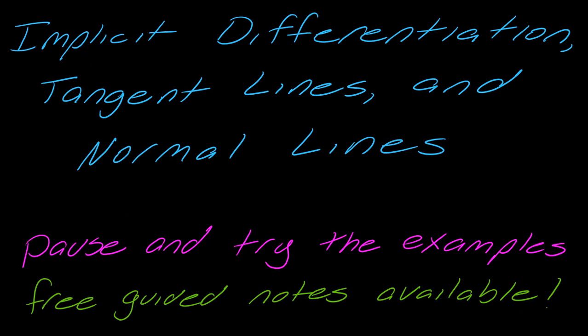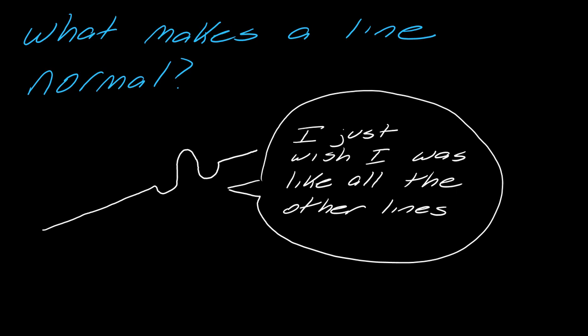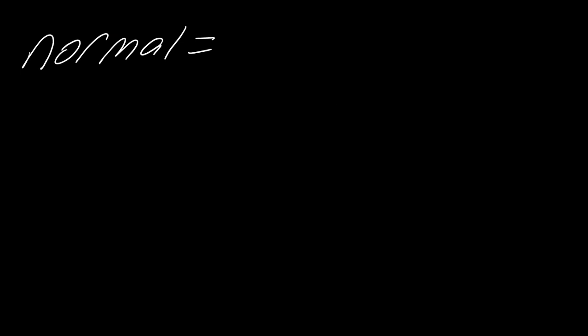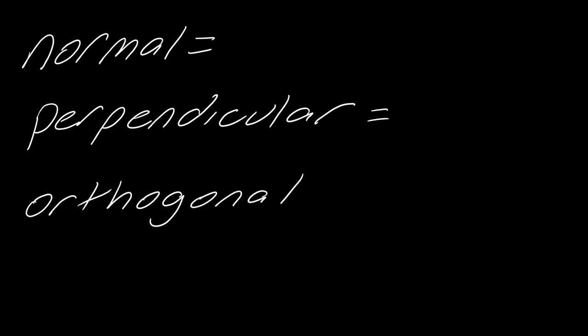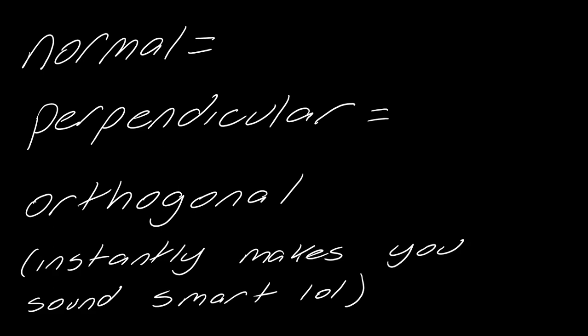So let's talk about what makes a line normal. It's very simple actually. A normal line is just another word for a perpendicular line. And by the way, another word for normal or perpendicular is the term orthogonal. I love the word orthogonal. I think it makes you sound instantly smart. So you can say this line is orthogonal to the other. Practice it, have fun with your friends.